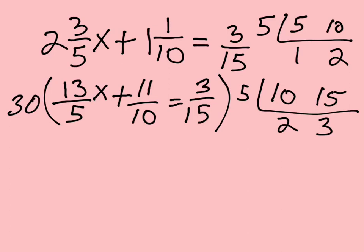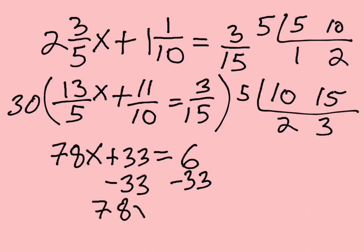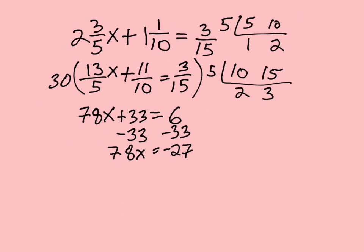So 30 divided by 5 is 6, 6 times 13 is 78. So 78X plus 33, because 30 divided by 10 is 3, 3 times 11 is 33, equals - and 30 divided by 15 is 2 times 3 is 6. And so then we subtract 33 from both sides, and we get 78X equals negative 27. I'm going to make this all a tiny bit smaller because I'm running out of room.